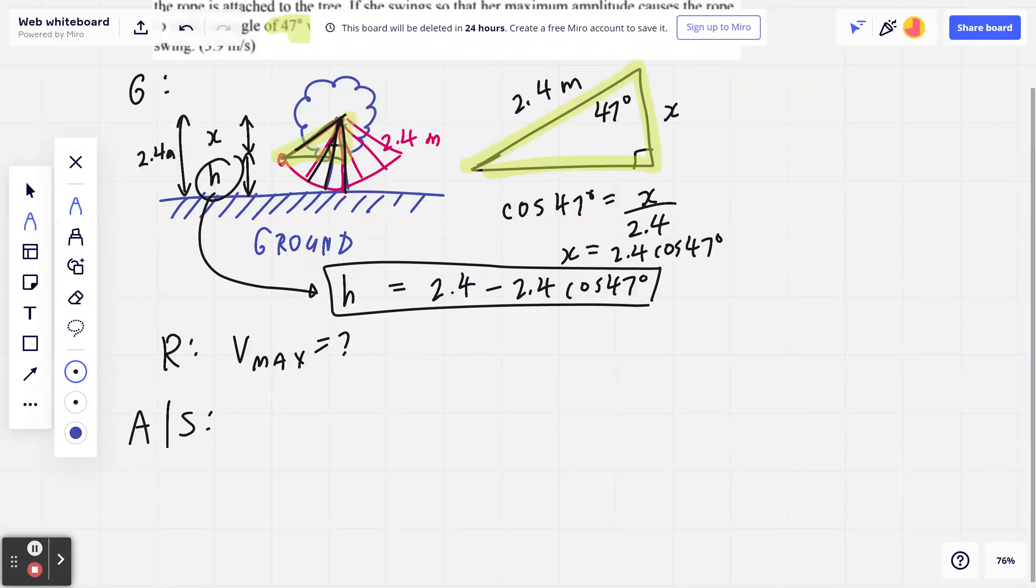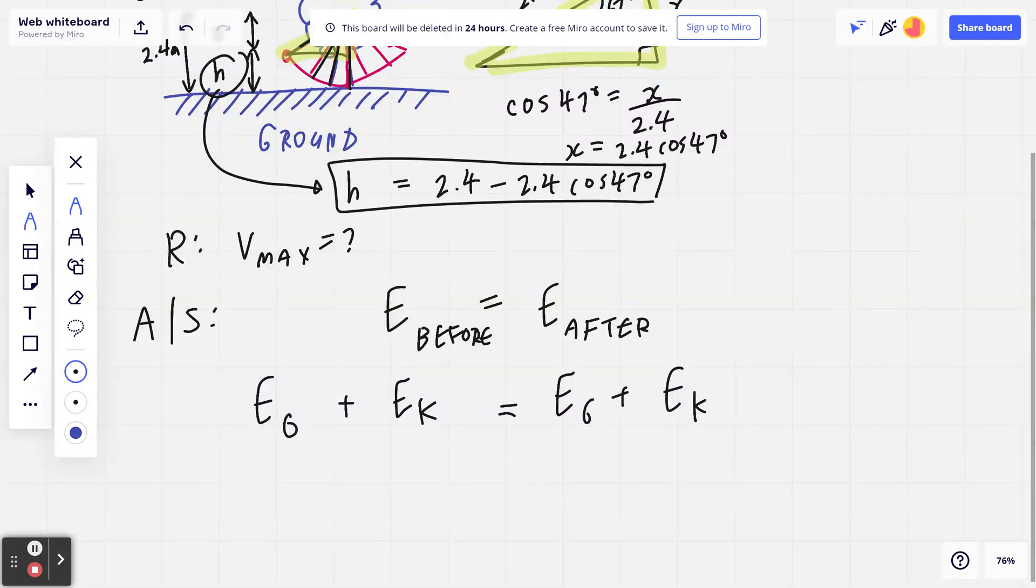A and S means I'm going to analyze this and we'll provide the solution at the same time. You always start with the conservation of energy, so the energy before equals the energy after. When it comes to energy, the two major energies that you want to think about are specifically the kinetic energy, which is E_K, and gravitational potential energy, which is E_G.